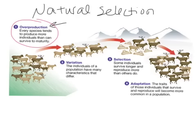Within each species, you're going to have variation — the individuals of the population are going to have some different traits and characteristics. With these elk, for example, we've got different colors: some that are light colored, some that are darker. Antlers could be varied, fur patterns could differ. There are variations within the population, just like there are within humans — every single human is not exactly the same.